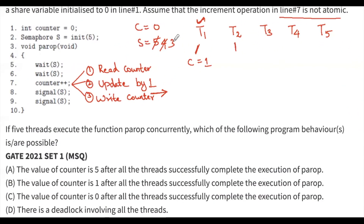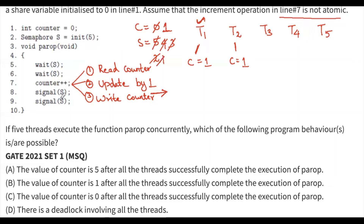T2 comes in, executes wait(S) twice - semaphore goes from 3 to 2 to 1. T2 then reads the counter value - it reads zero, not 1, because T1 has not written yet. T2 updates its local value to 1. T2 is not preempted - it writes the value, so counter becomes 1 in memory. T2 then signals twice, bringing semaphore to 3. T2 has completed execution; T1 is still preempted.